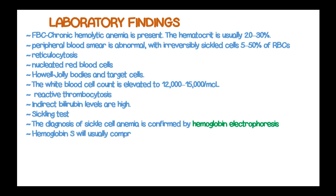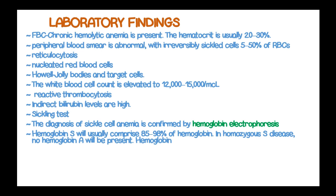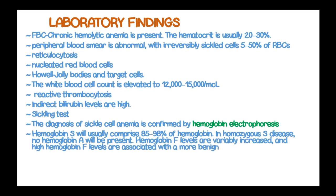In hemoglobin electrophoresis of sickle cell disease, hemoglobin S usually comprises 85–98% of hemoglobin. In homozygous S disease, no hemoglobin A will be present. Hemoglobin F levels are variably increased, and high hemoglobin F levels are associated with a more benign clinical course. Chest X-ray can be done for cases of acute chest syndrome.